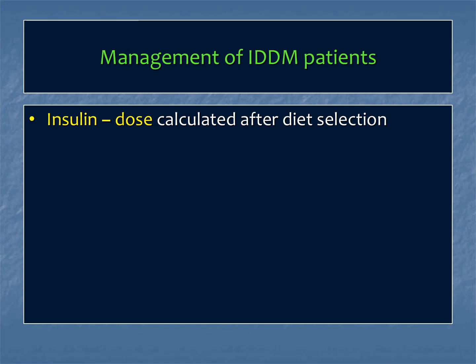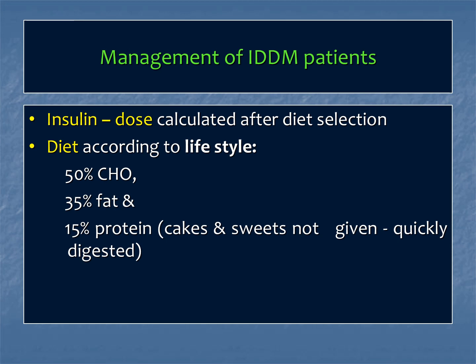Regarding management of insulin-dependent type 1 diabetic patients: first we specify a specific diet for the patient, then calculate the dose. Diet is called the lifestyle — for example, a very active patient will have a different diet selection and different insulin requirement compared to a common school, college, or office worker. Usually 50% of the diet should be carbohydrates, 35% fat, and 15% protein. Cakes and sweets are generally not given.